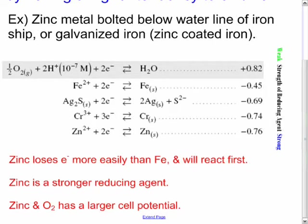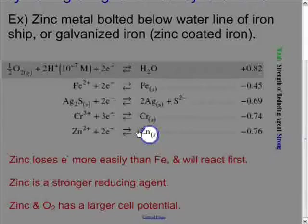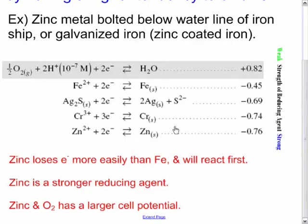Another way of saying this is that zinc loses electrons more easily than iron, so it will react first. Zinc is a stronger reducing agent, or that zinc and oxygen have a larger cell potential. So the oxygen and the zinc will react first. And that is the Chemistry 12 review for corrosion.